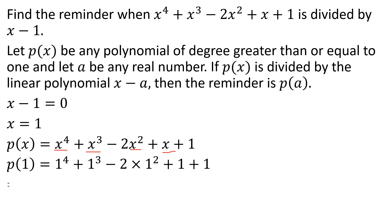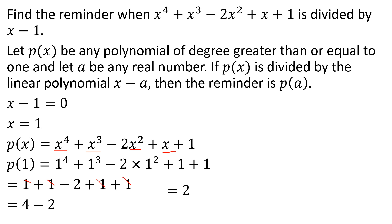1 raised to 4 is equal to 1. So 1 by 1 is equal to 1. Minus 2 into 1 is equal to 1. Then the result for x⁴ plus x³ minus 2x² plus x plus 1 divided by x minus 1 gives us the remainder.